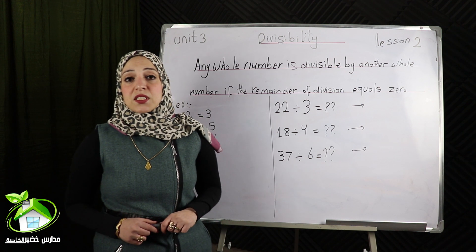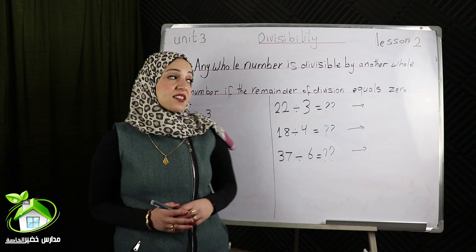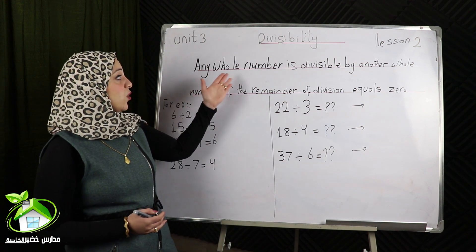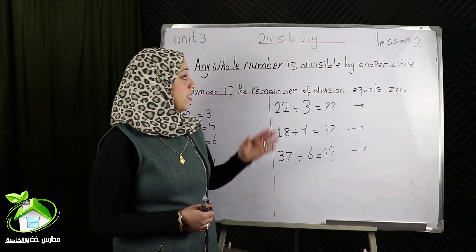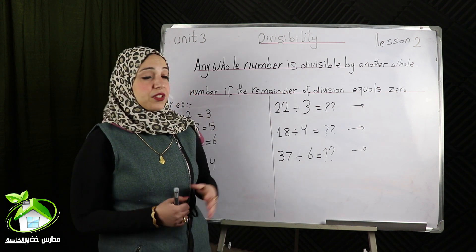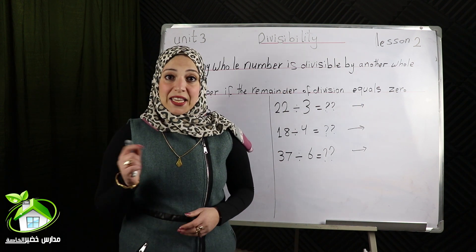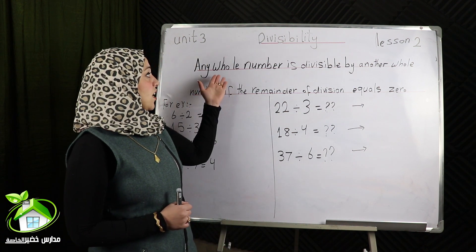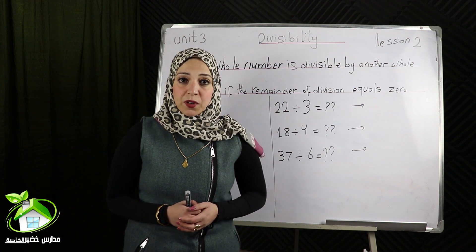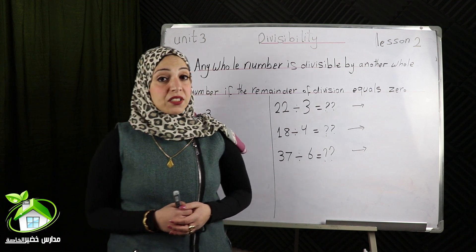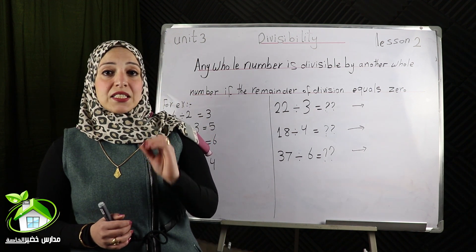Let's start with what the meaning of divisibility. I can say that any whole number is divisible by another whole number if the remainder of division equals 0.